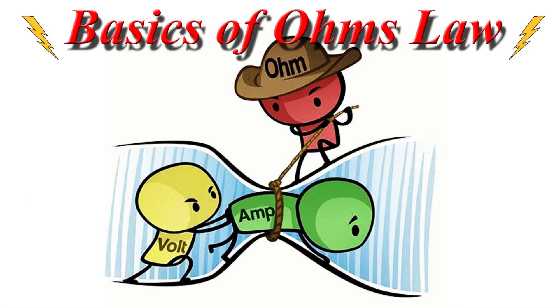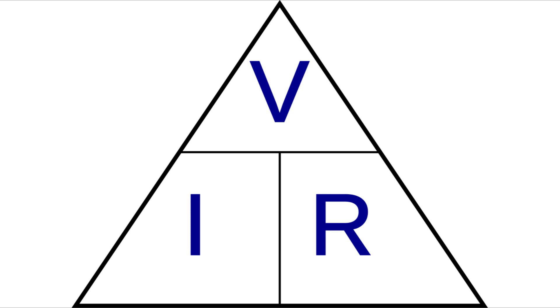This is Basics of Ohm's Law. Ohm's Law is the fundamental of electronics, and it can be summed up as V over IR, or voltage over current and resistance.